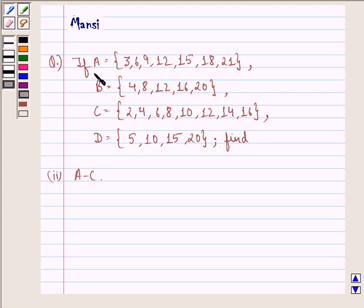The question says if A equals to the set 3, 6, 9, 12, 15, 18, 21,